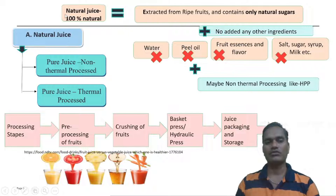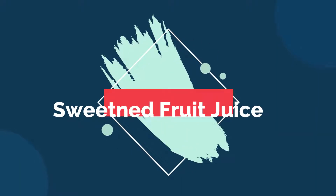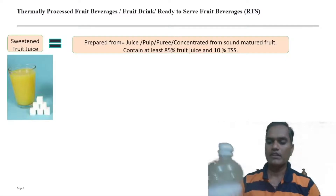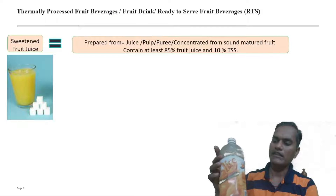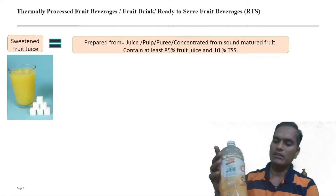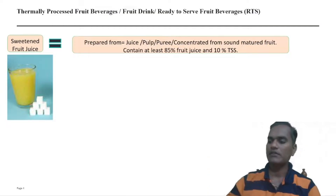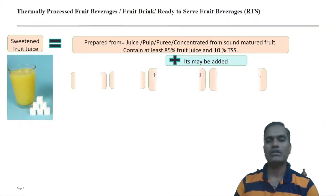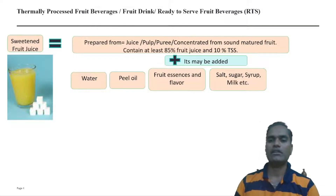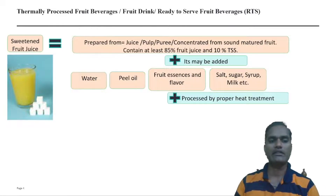Whatever the fruit juice extracted is directly packed, stored at refrigeration temperature, and distributed. The sweetened fruit juice includes RTS beverages — you can see a number of these products available in the market. These are thermal processed sweetened fruit juices in which fruit juice is added with sugar, water, and they may be added with color, flavors, and other ingredients.